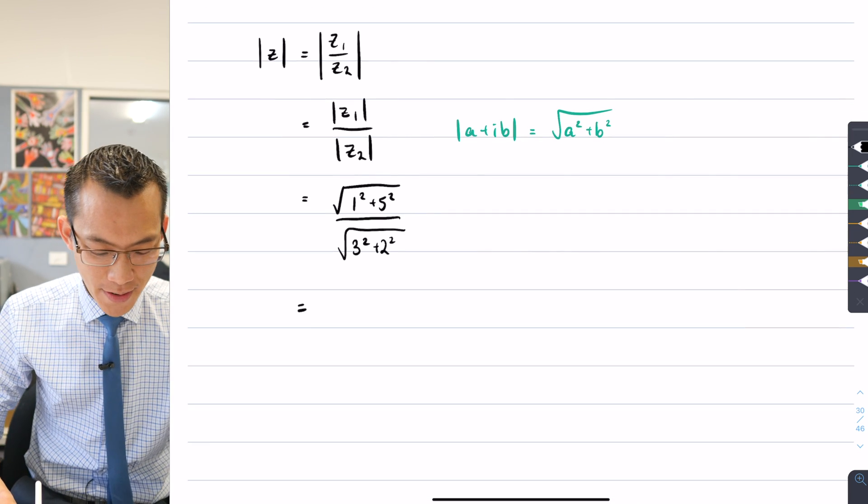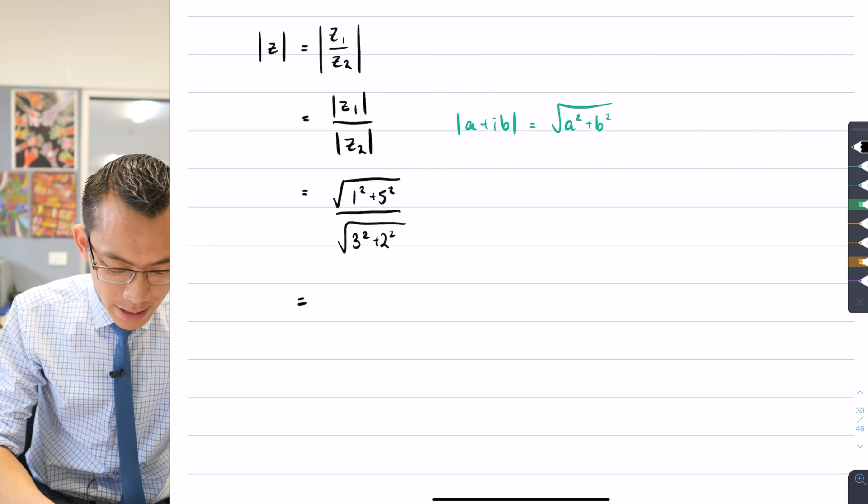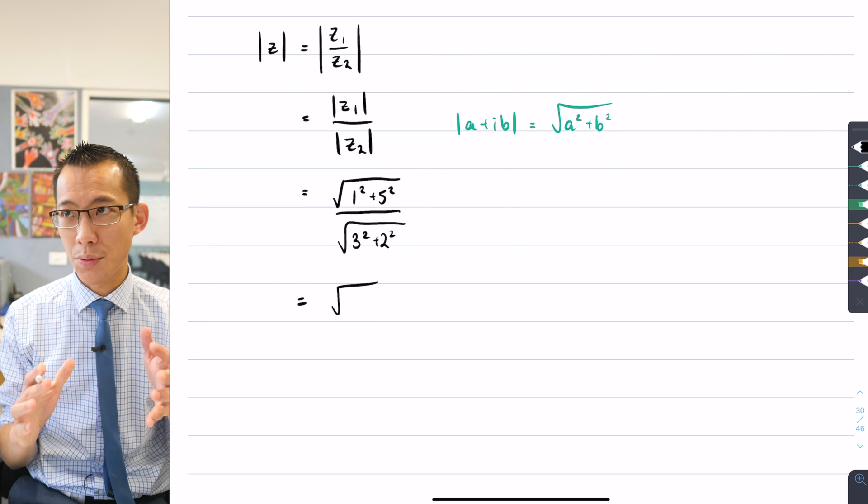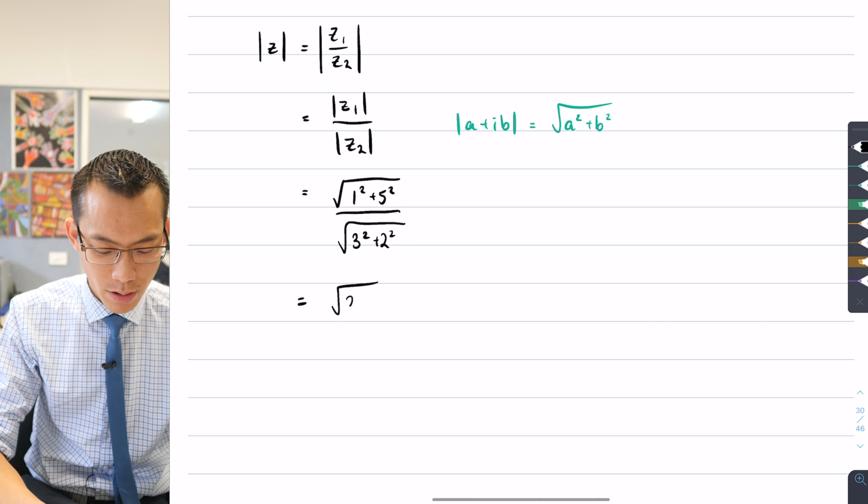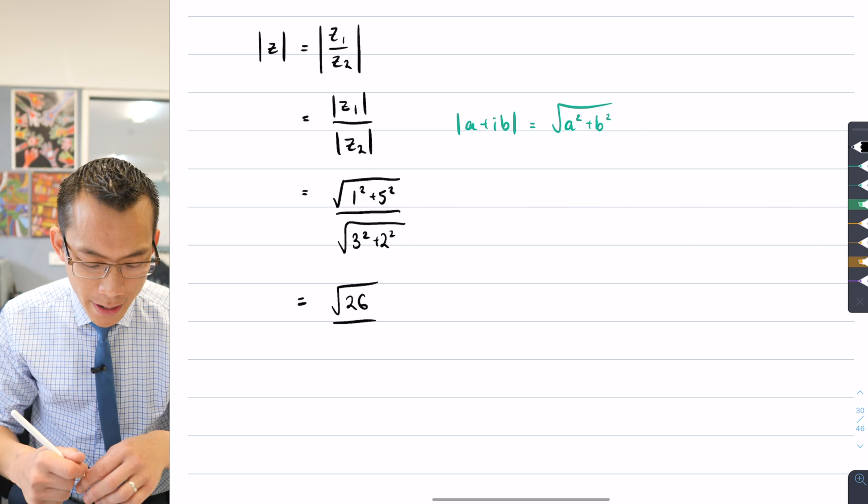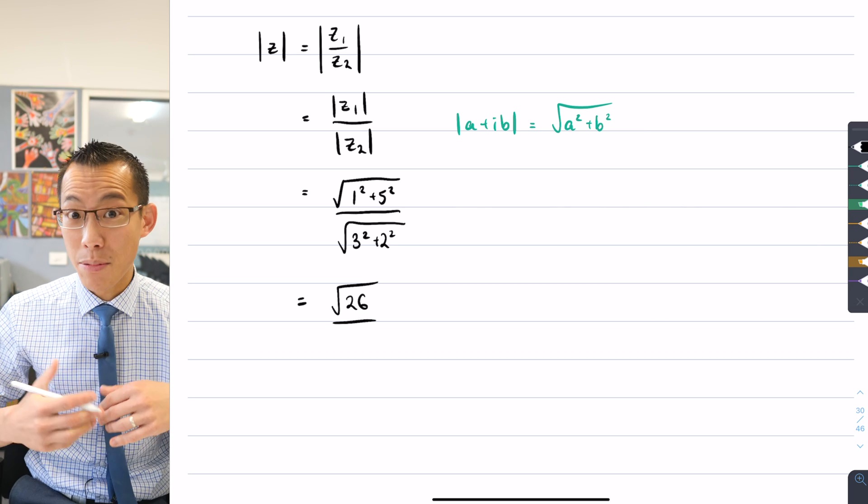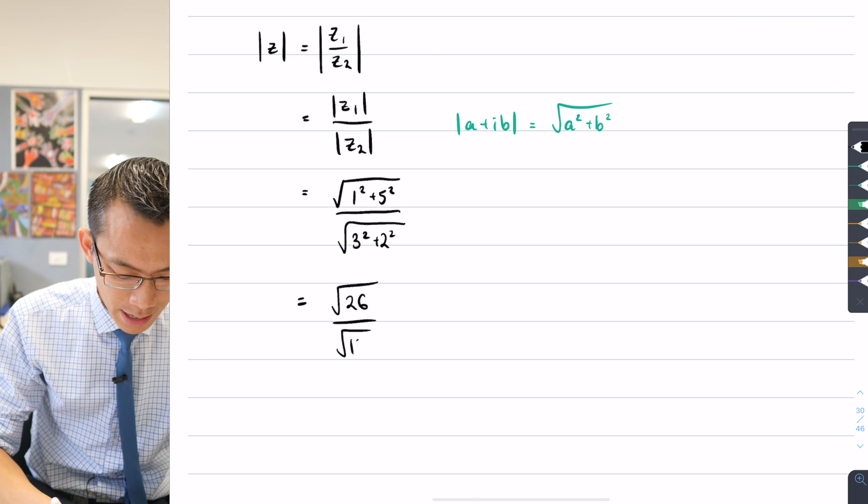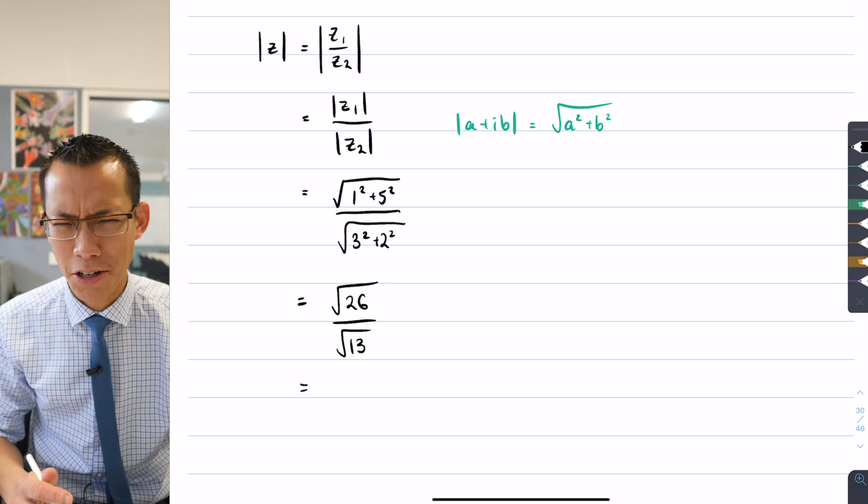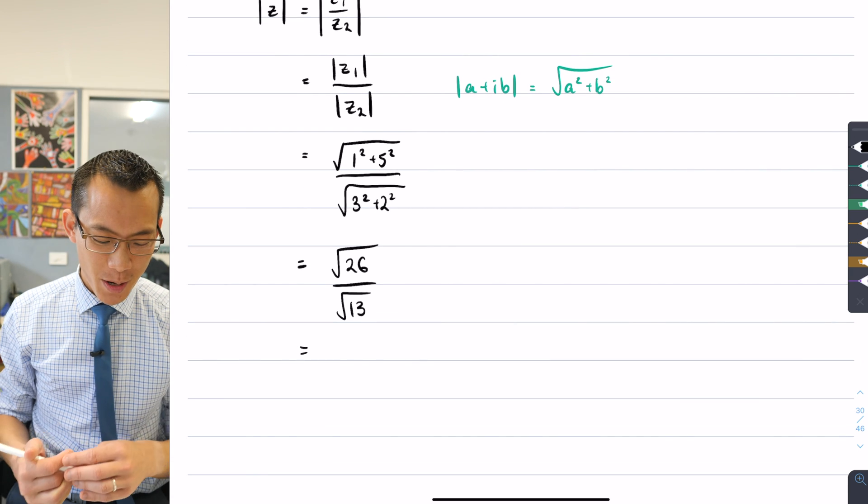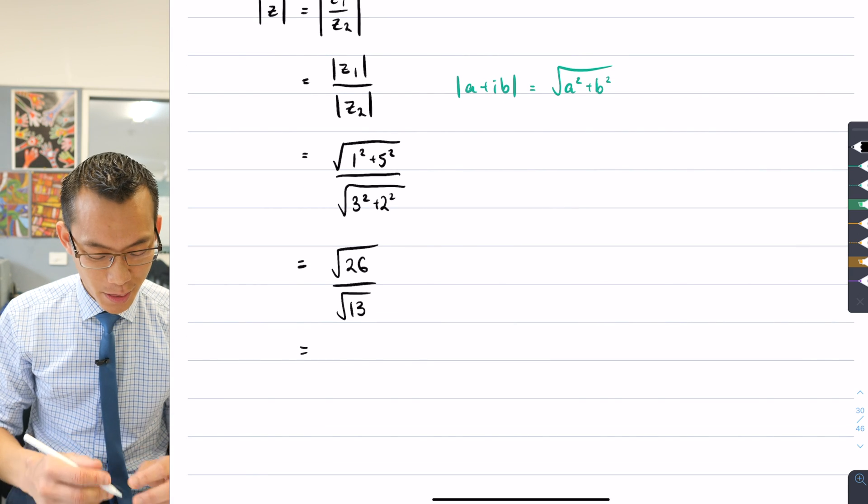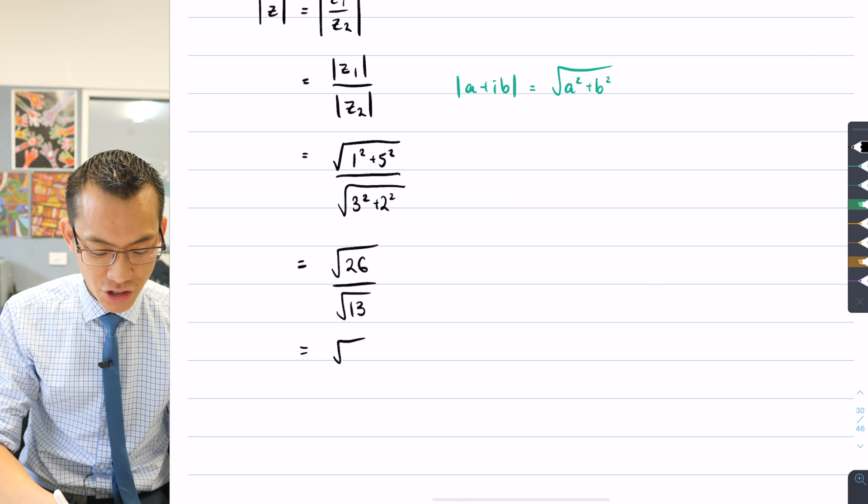Okay, let's start to simplify this out. On the numerator it looks like I'm getting the square root of one plus 25, so that's going to be the square root of 26. And then the denominator I'm getting the square root of nine plus four, which is 13, so square root of 13.